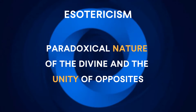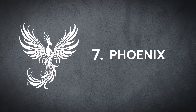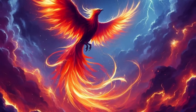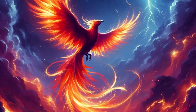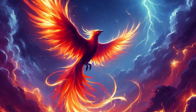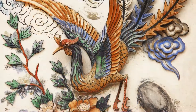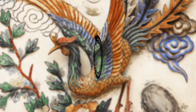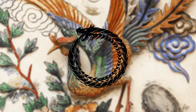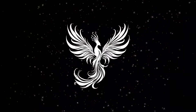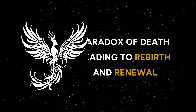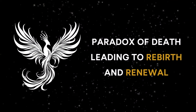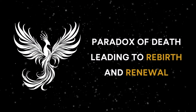Another paradoxical symbol is the Phoenix — a mythical bird that burns itself to ashes and then rises anew from those ashes, much like the Ouroboros. The Phoenix symbolizes the paradox of death leading to rebirth and renewal.